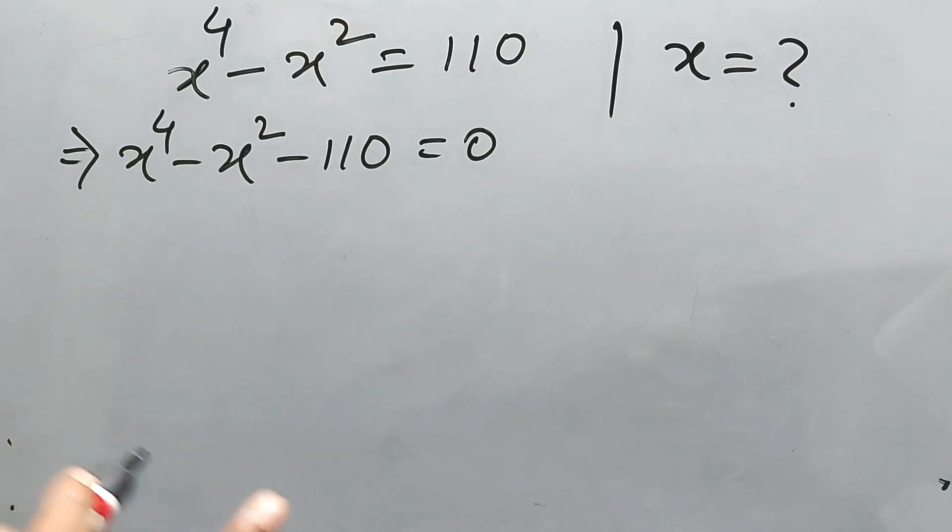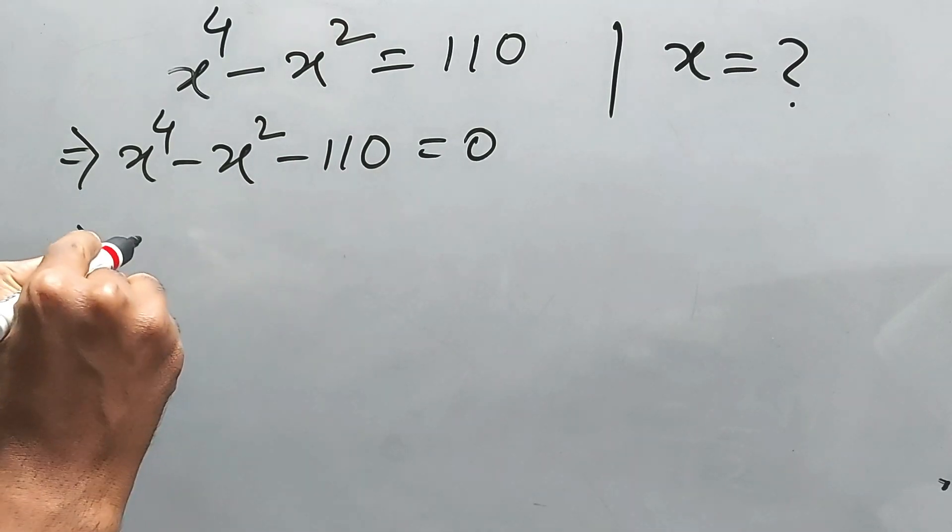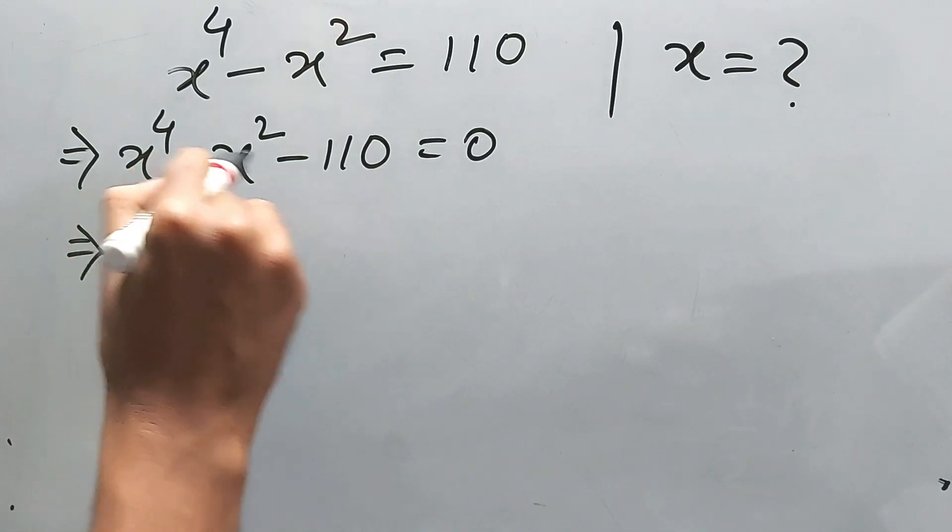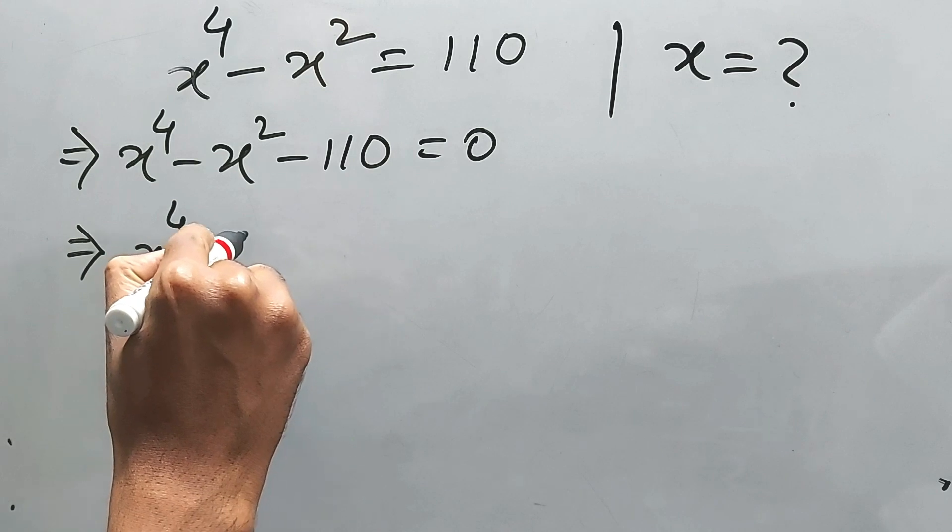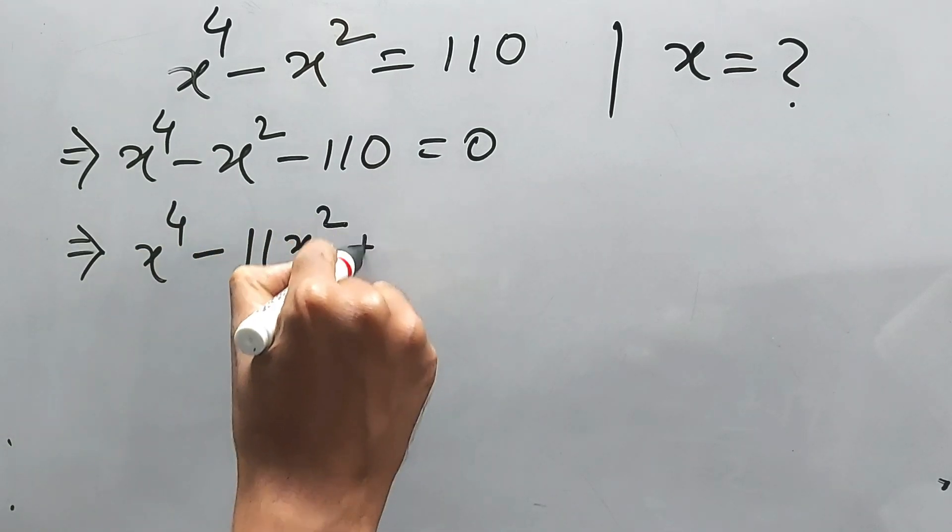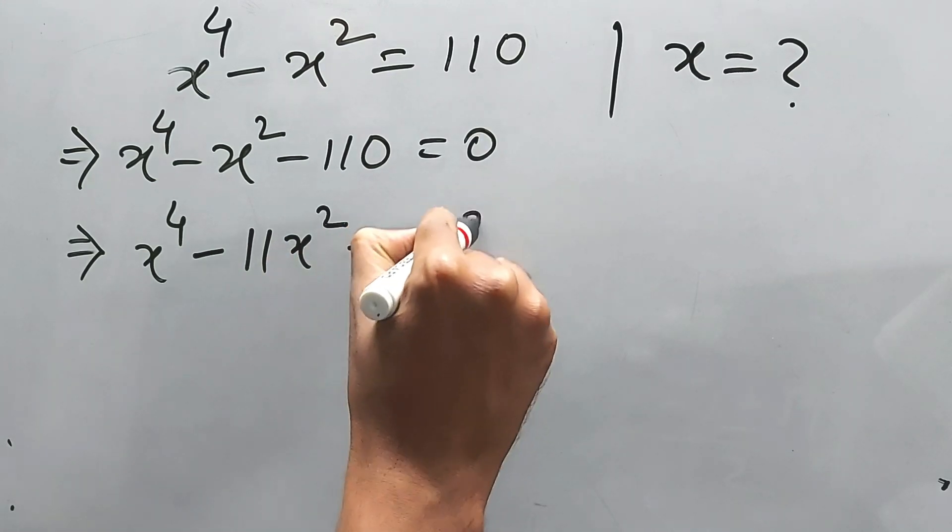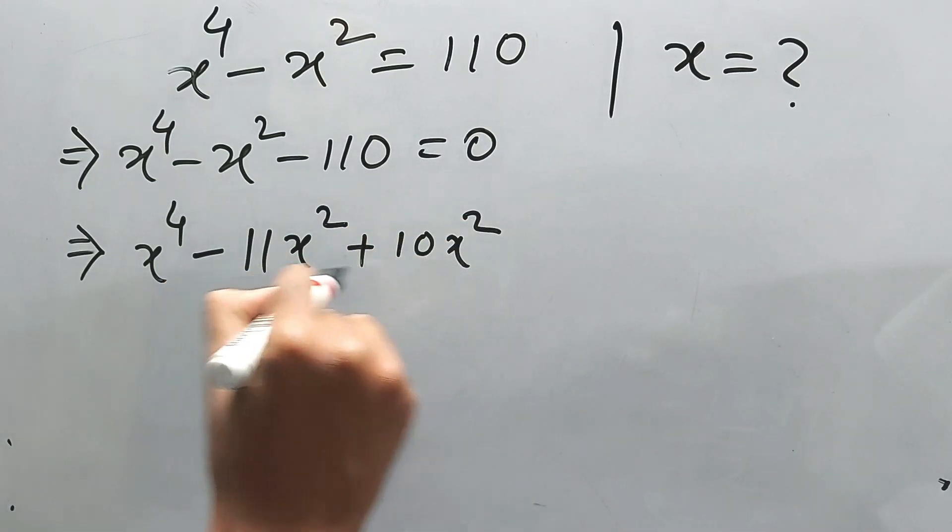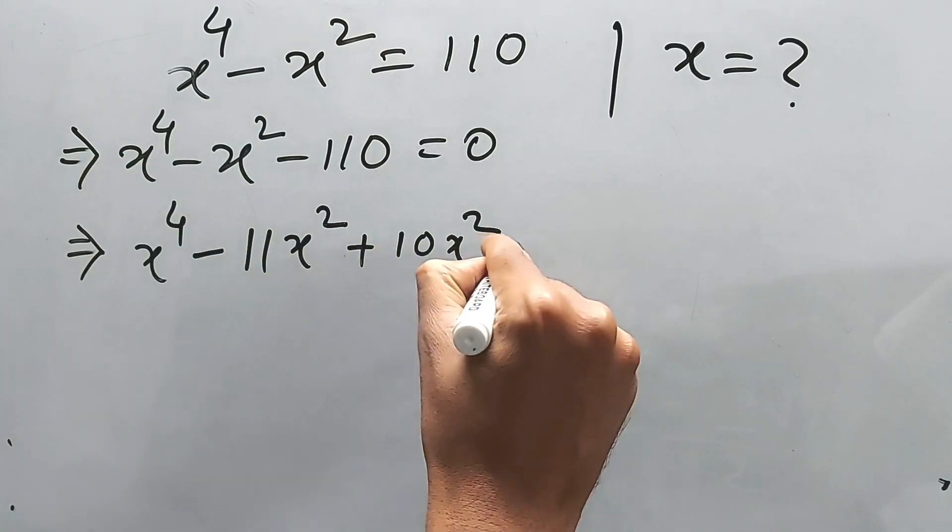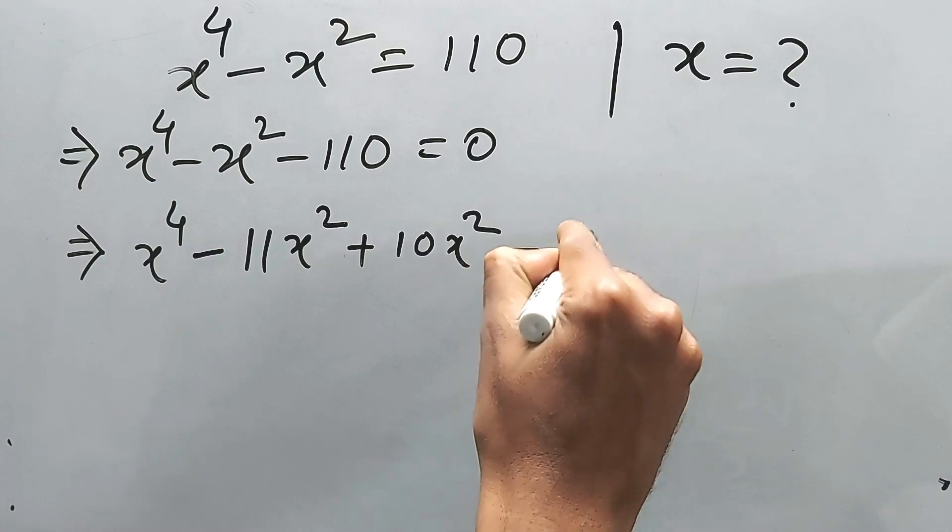Let's solve it. 110 means simple thing, 11 to 10, right? So simply we can write like x to the power 4 minus 11x squared plus 10x squared. These two are giving us minus x squared, right? So this is middle term factor of minus 110.